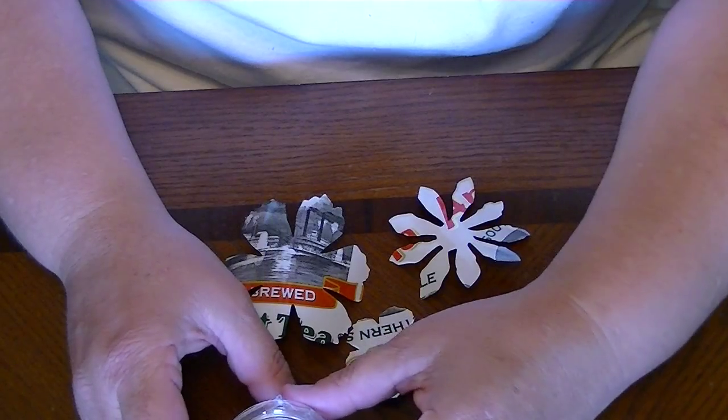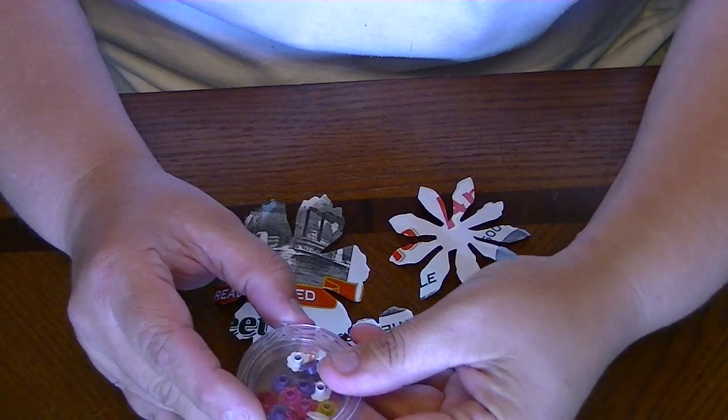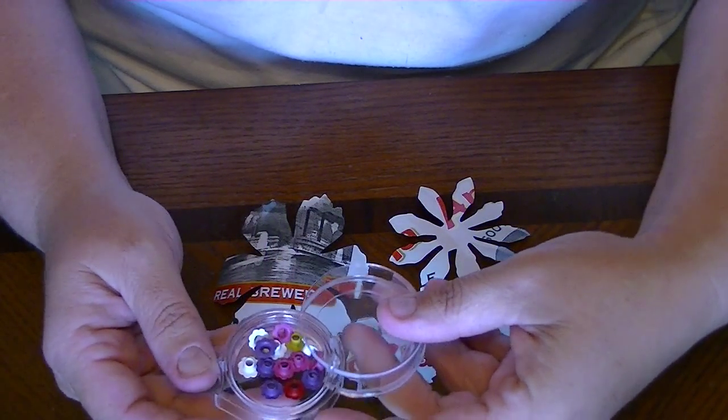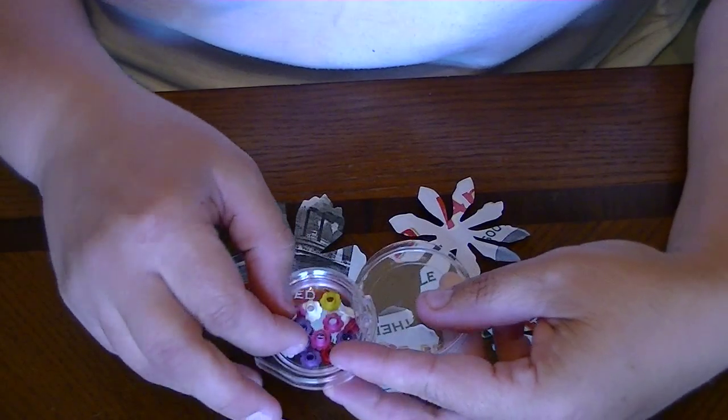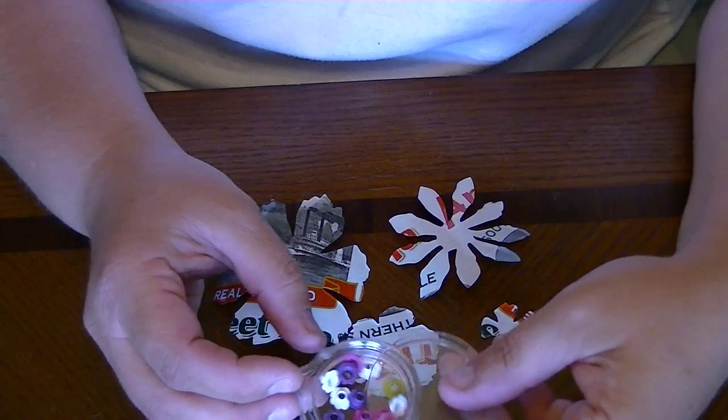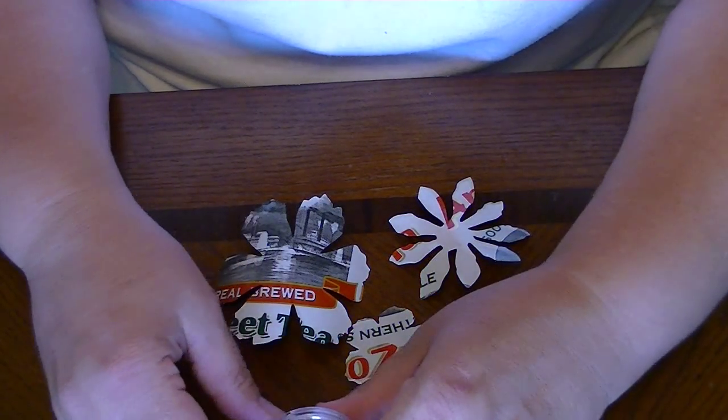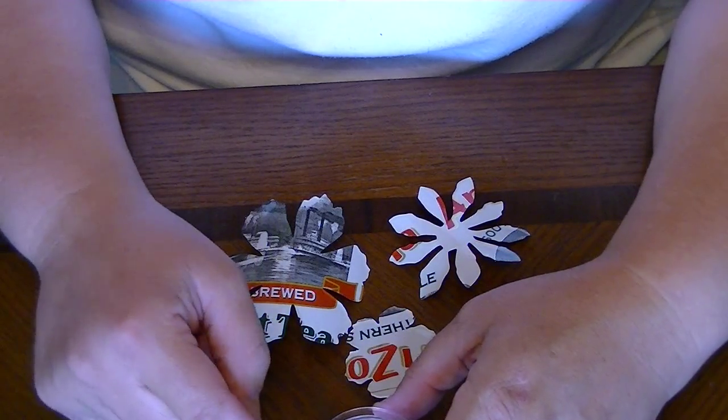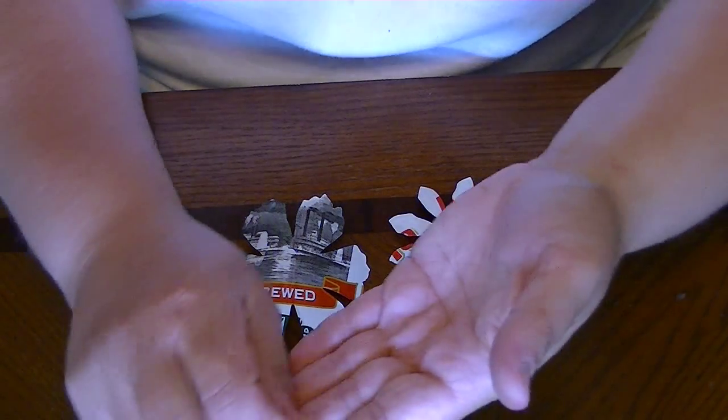So if you go to your scrapbooking section, you'll find lots of different eyelets. These ones here have a little floral shape to them. I have some that are dragonflies. Most of them you'll find however are just your basic round eyelet.